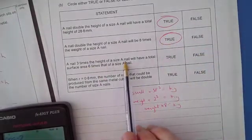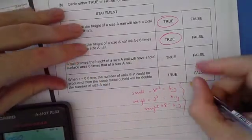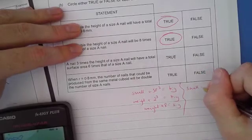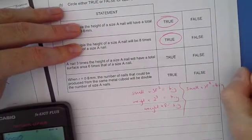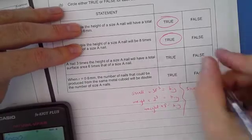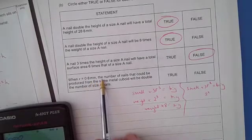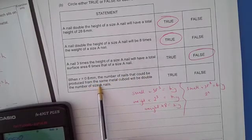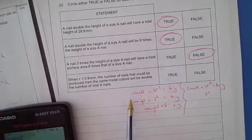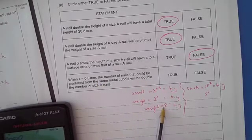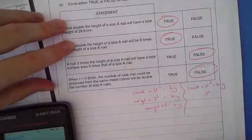A nail of three times the height of size A will have a total surface area six times that. That's related to the same thing again, but for area, it would be small times by scale factor squared for area equals the big. That's going to be 2 squared and 2 squared is 4. That says 6, so it's false. And then finally it says when R equals 0.8, the number of nails that could be produced from the same metal cuboid will be double the size of that. Well again, that's not true because of this fact here. You're going to make it actually an eighth of that, so that's false as well.